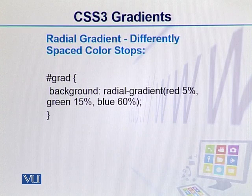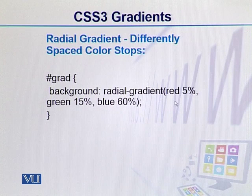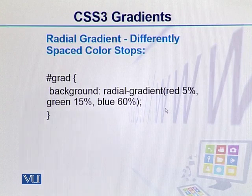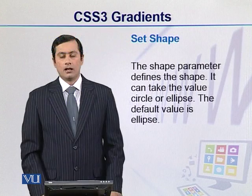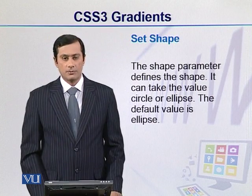If we want to specify how much space each color will take, we add percentage values. For example, we can mention that red will take 5%, green will take 15%, and blue will take 60%. We can also mention shapes in radial gradient.